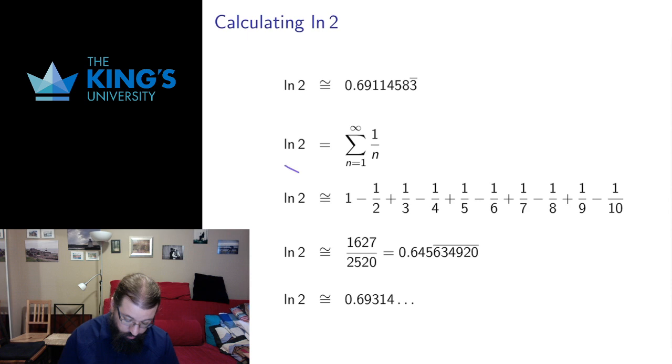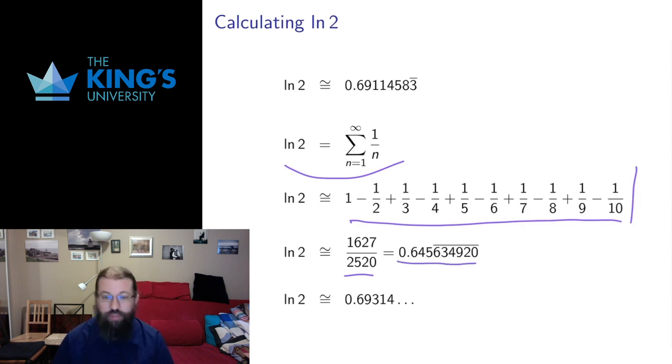We also knew that ln 2 was the value of the harmonic series. So let's actually try and truncate the harmonic series. Here's a truncate of the harmonic series after its first 10 terms. If I do the arithmetic and add up all these fractions, I get 1627 over 2520, which is 0.645 plus a long repeating term.